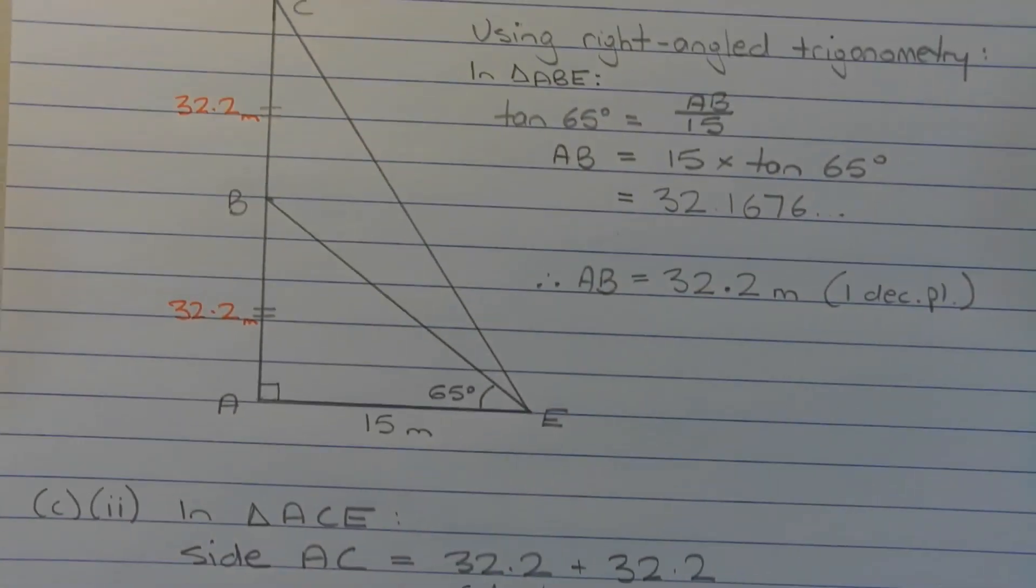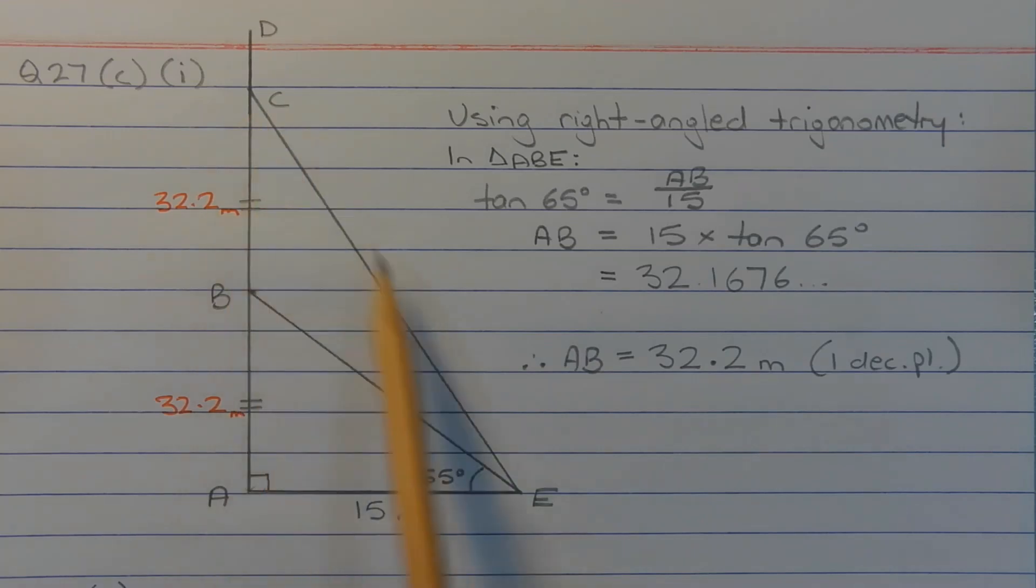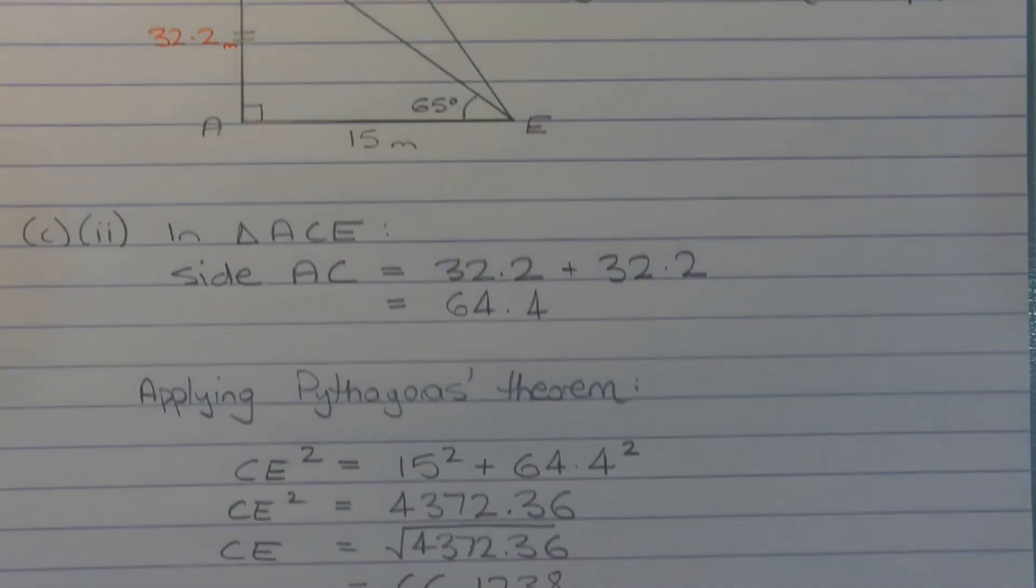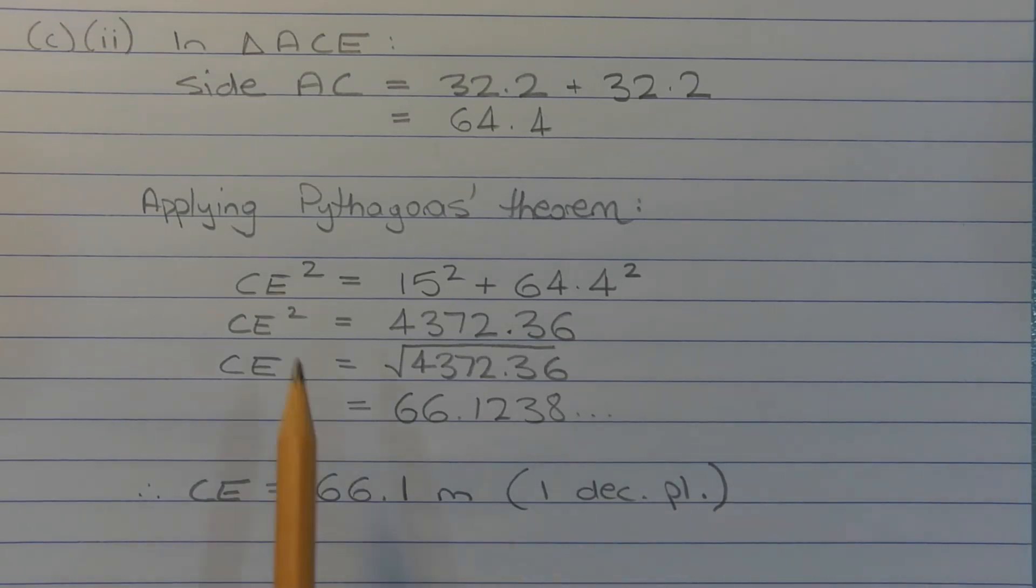Now because we have the length of both of the short sides of this right angle triangle ACE, we can apply Pythagoras' theorem to find the length of the hypotenuse CE. So CE squared is equal to 15 squared plus 64.4 squared. Evaluating the right hand side, we have CE squared is equal to 4,372.36.